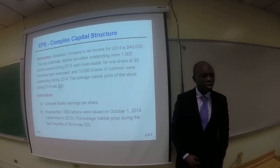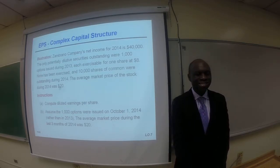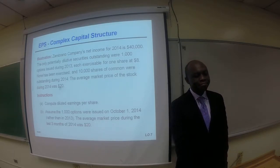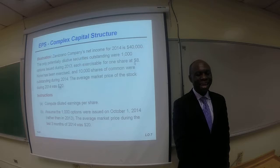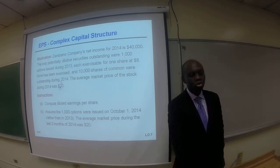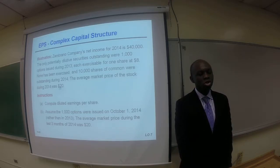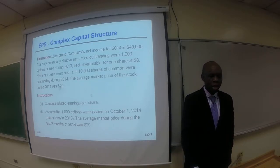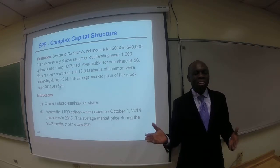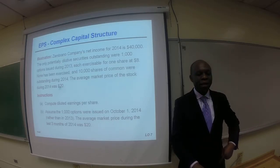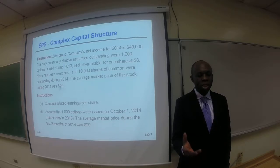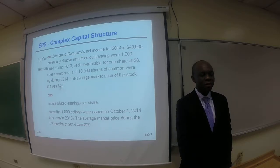Moving along, let's take a look at the illustration. Zee Company's net income for 2014 is $40,000. The only potentially dilutive securities outstanding were 1,000 options issued during 2013, each exercisable for one share at $8. None has been exercised, and 10,000 shares of common stock were outstanding during 2014. The average market price of the stock during 2014 was $20. We are now to compute diluted EPS. Here is the assumption: we are going to assume those 1,000 options were issued at the beginning of the year, and the average market price during 2014 was $20.